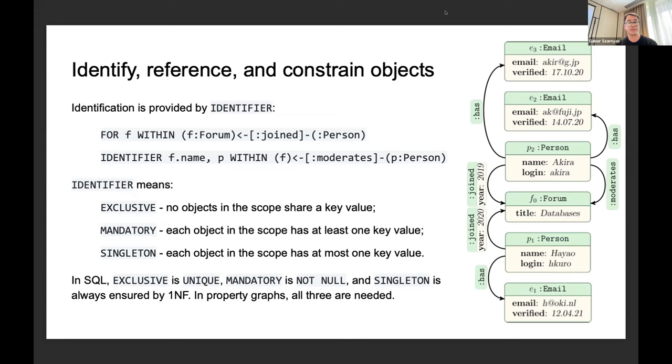You can look at combinations: exclusive only, or exclusive mandatory, or singleton, or all three. Then we have this IDENTIFIER. If we look at the analog in SQL, exclusive would be a uniqueness constraint. Mandatoryness would be a particular attribute not being NOT NULL. Singleton just comes along with the data. Just as in SQL, in property graphs all three of these are needed.